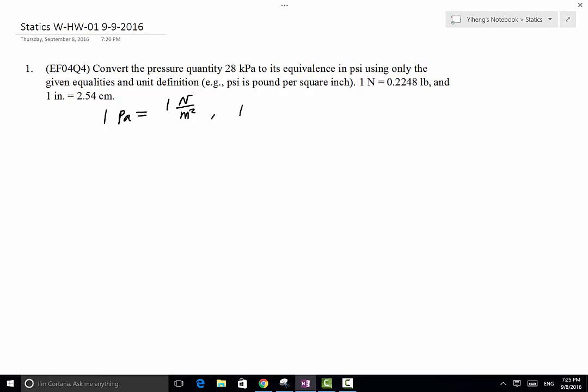Therefore 1 kPa, this k here, this prefix means 1000 times, therefore this equals to 1000 Pa, which means that it equals to 1000 N per meter squared. Therefore, as you can tell, we are actually asked to convert 28,000 N per meter squared to psi.